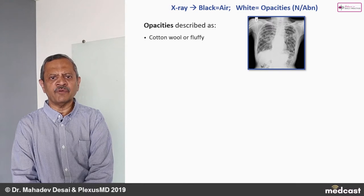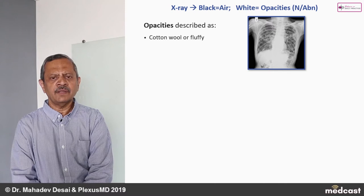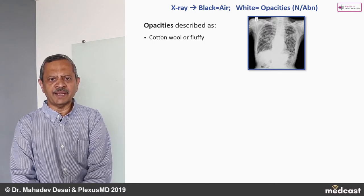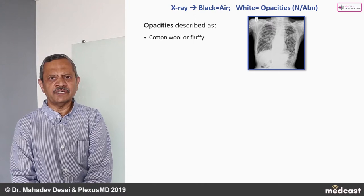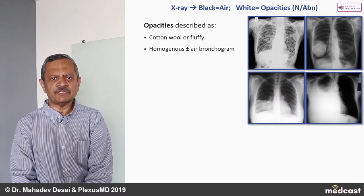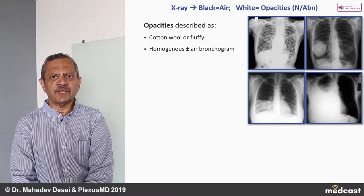When opacities are abnormal, they are described by various descriptive terms. When we say cotton wool or fluffy, they look just like threads of cotton. The term infiltration is also used — fluffy infiltration or cotton wool infiltration. These are usually indicative of active pulmonary tuberculosis.